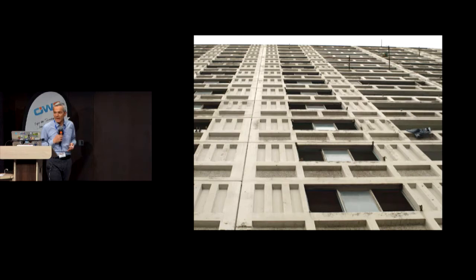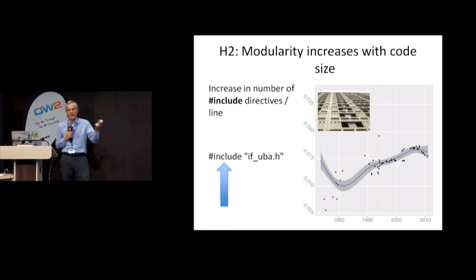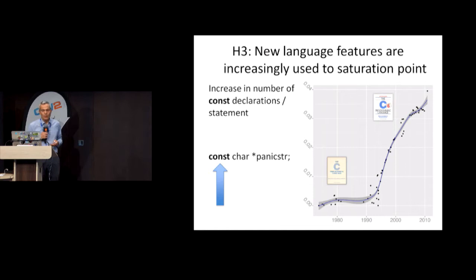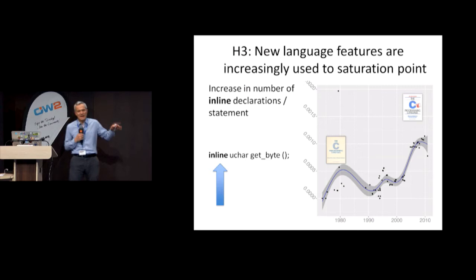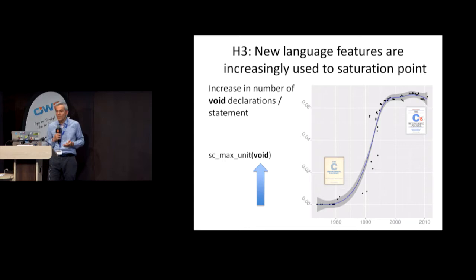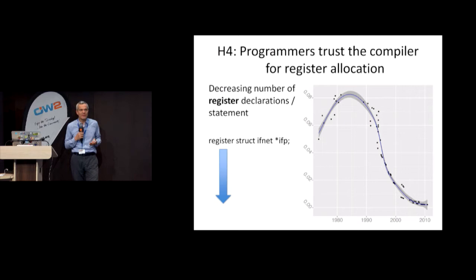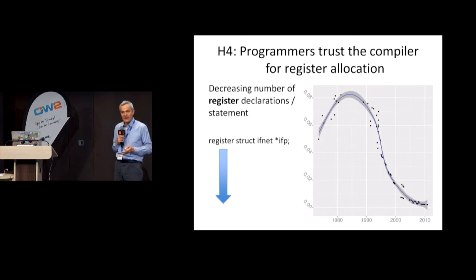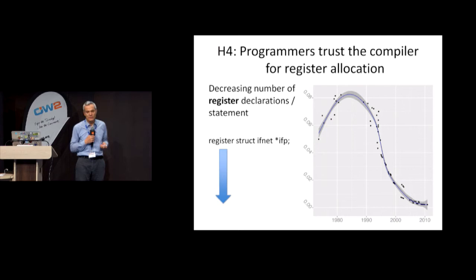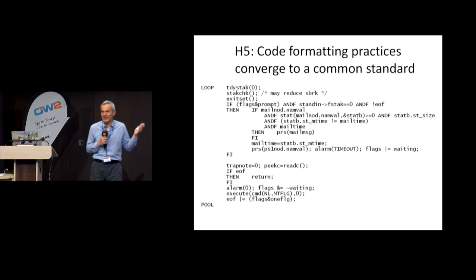Looking at modularity, we see that we nowadays use more static declarations — static declarations went up — and the number of include directives also went up to import library modules. Looking at programming languages, we see that const is used more, enumeration declarations increased, and inline went up and then down because it was only partly supported by compilers and people used other keywords instead. Void was used increasingly, and volatile started being used when it became available. Regarding compiler technology: at the beginning people used the register keyword to say which variables would end up in registers. Nowadays we no longer use that — it has fallen into disuse because we trust the compiler to do a much better job than human intuition.